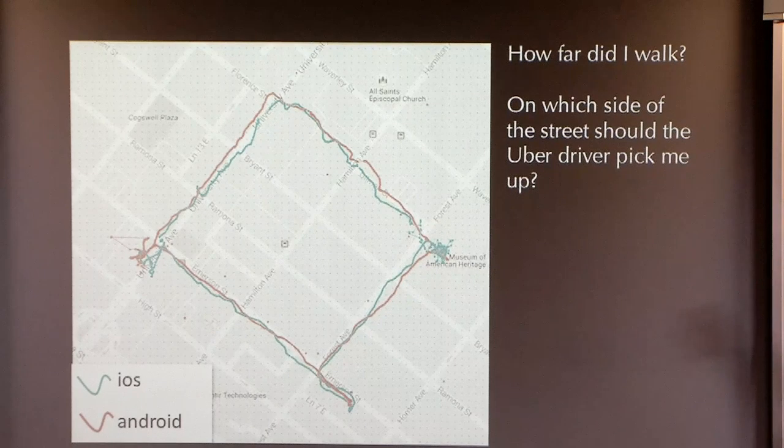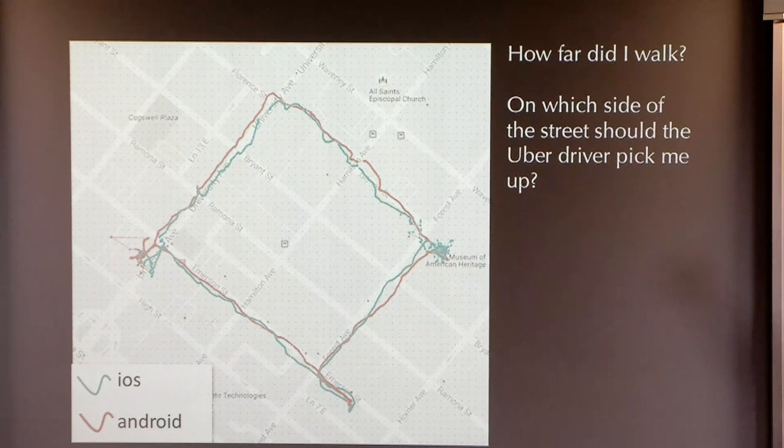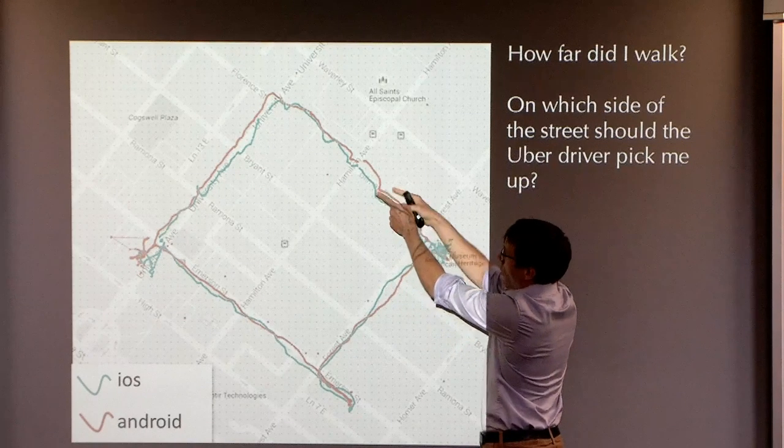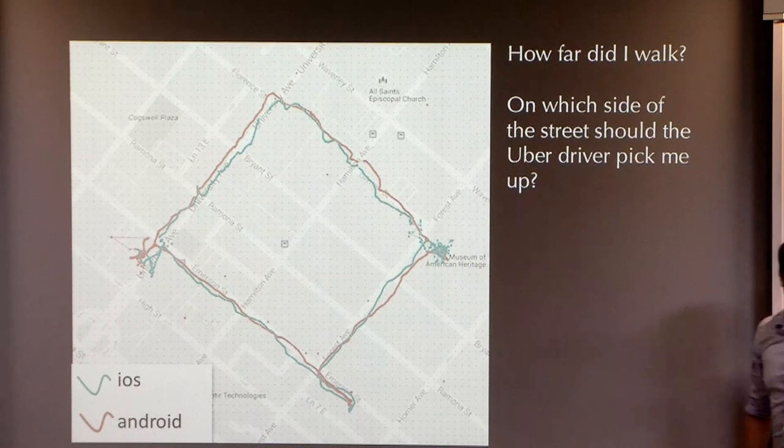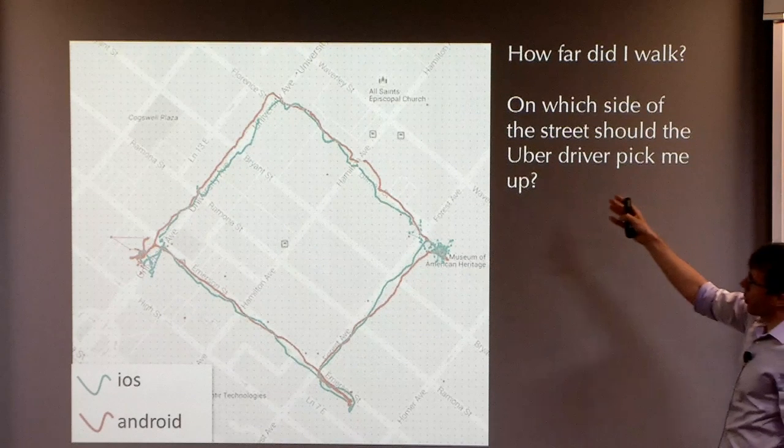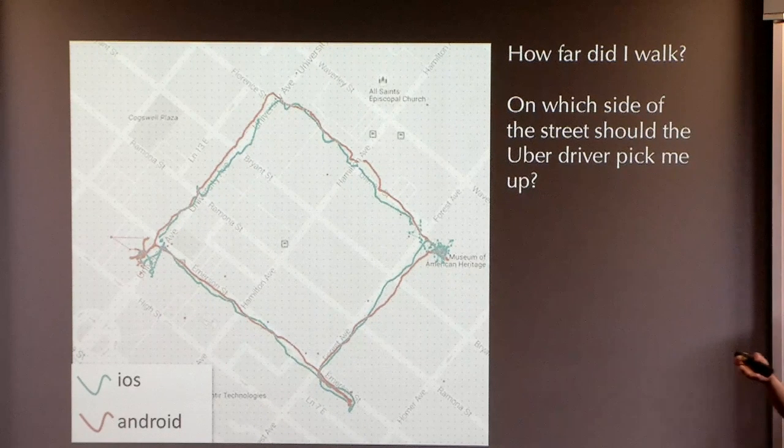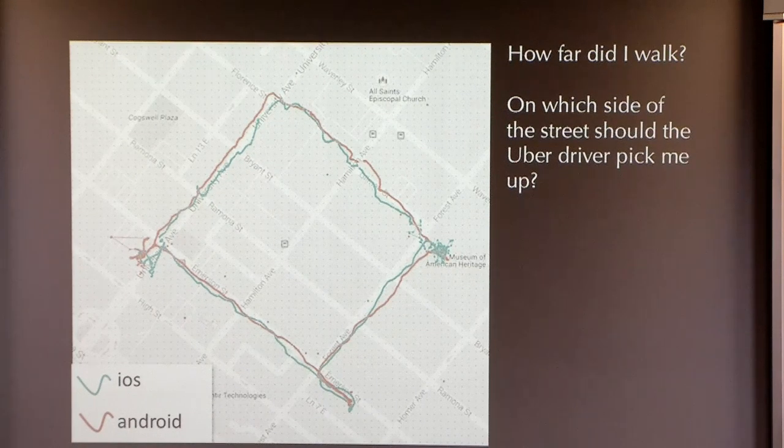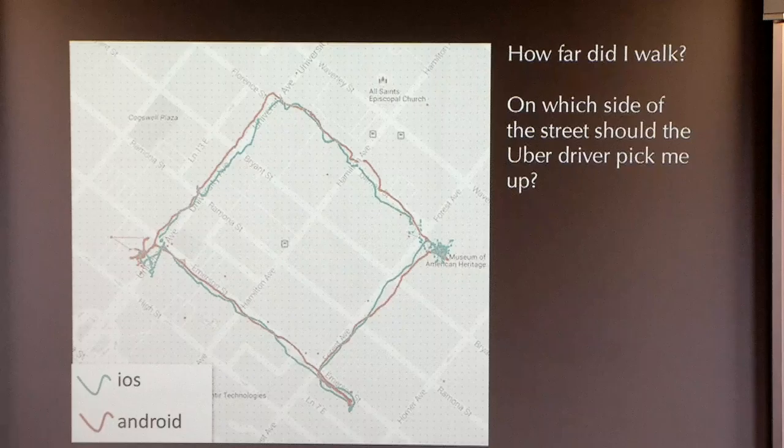It's great that we have this. But just the traces on their own, they won't be terribly useful if I want to ask a question like, how far did I walk? Each one of these dots is 10 metres apart. So you can see the uncertainty. It's not really tight enough if we want to use it to ask questions like, which side of the street should the Uber driver come and pick me up on? If you're in a complicated city with one-way systems, that becomes quite a time-saving issue.